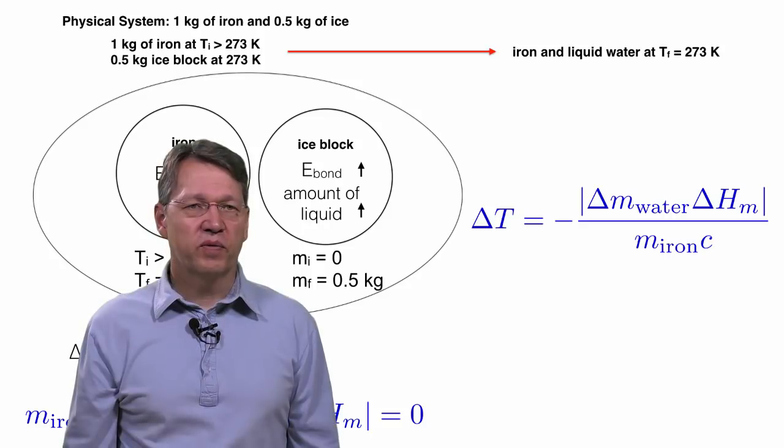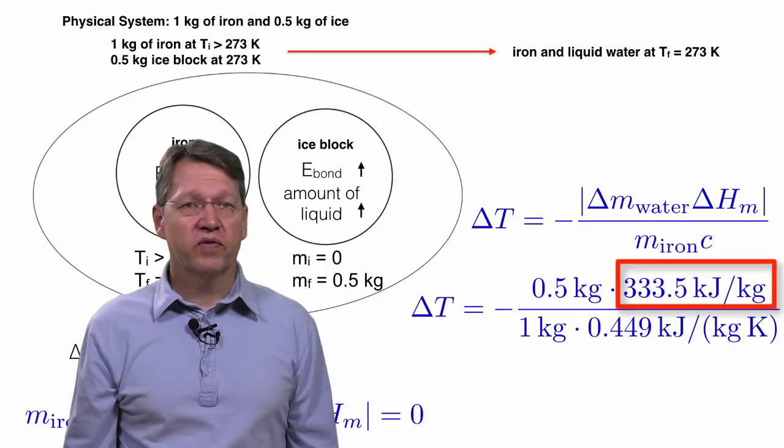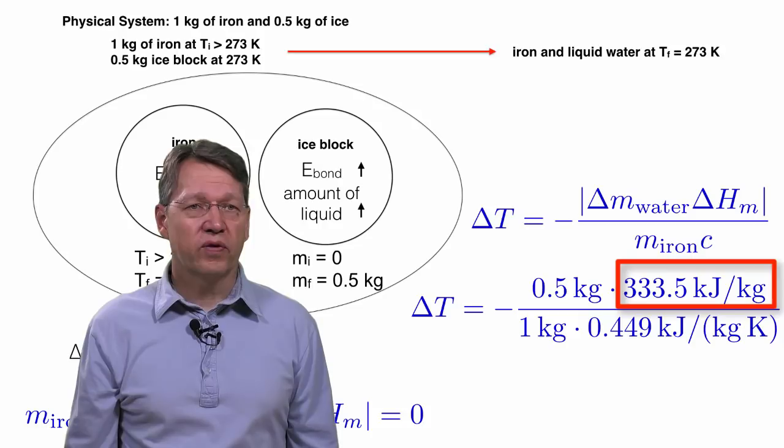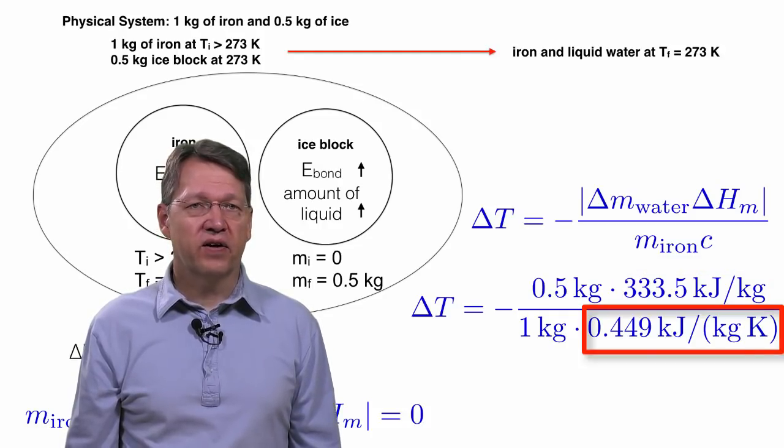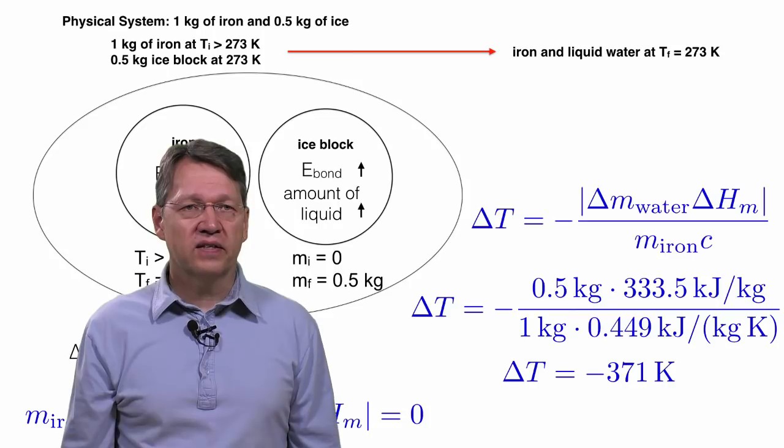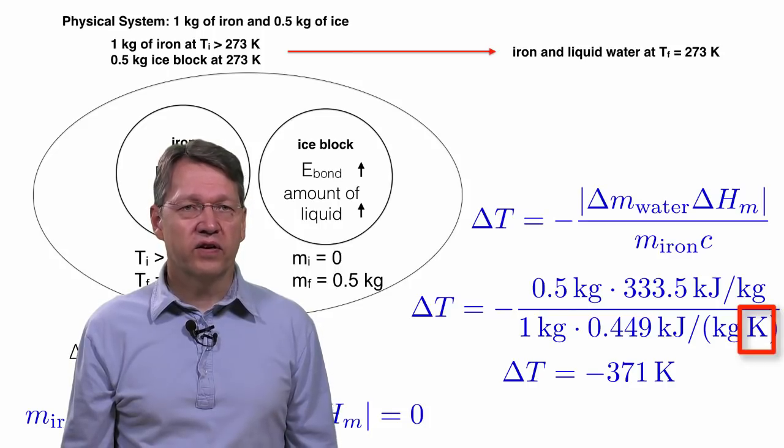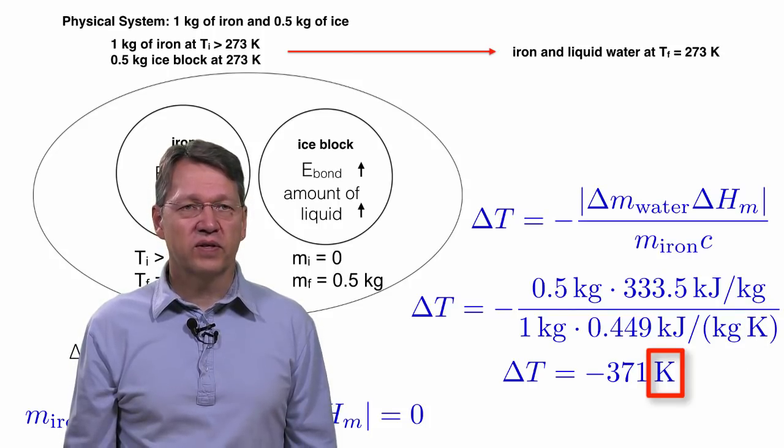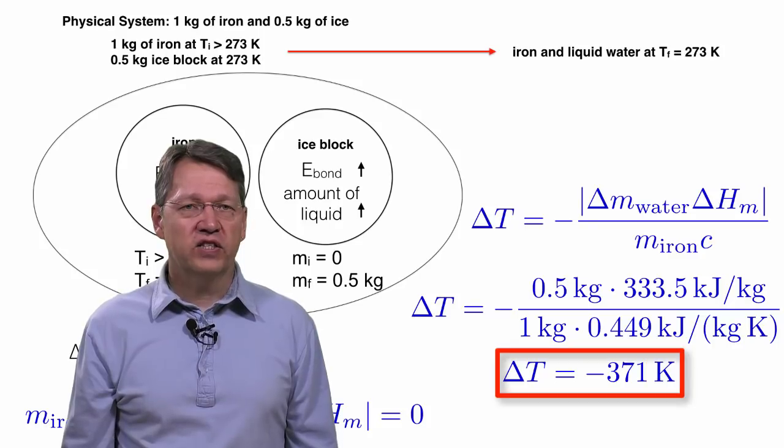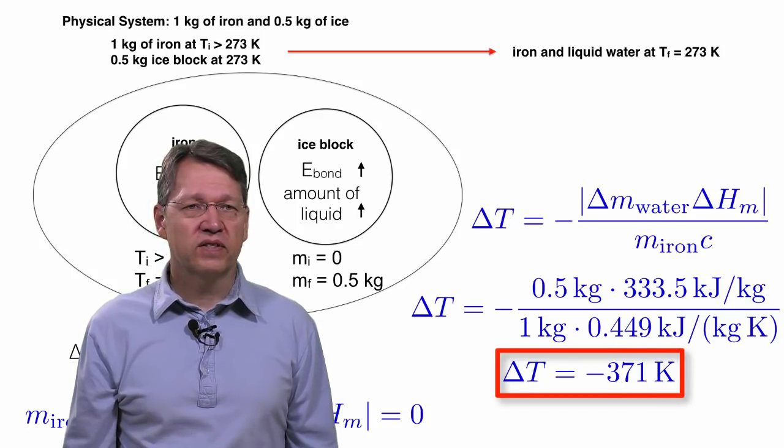In the DL workbook, we find that the specific change in enthalpy for melting ice is 333.5 kilojoules per kilogram, and the specific heat capacity of iron is 0.449 kilojoules per kilogram Kelvin. Notice that all the units cancel except for 1 over Kelvin in the denominator, so our final answer is in Kelvin. And we find a change in temperature of minus 371 Kelvin, which means the initial temperature was 644 Kelvin.